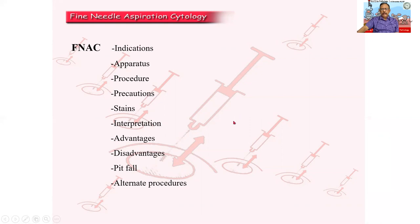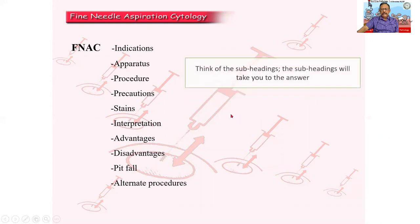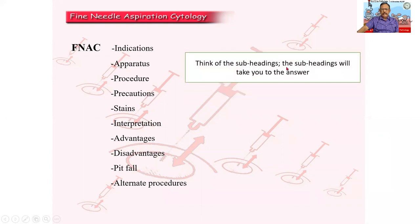You will have to think of all these things. Always think of the subheadings — the subheadings will take you to the answer. What are the indications for FNAC? What is the apparatus, procedure, precautions, stains, interpretation, advantages, disadvantages, pitfalls, and alternate procedure? Even if your answer is going to be small, break it up into subheadings — it will help you answer the question better.